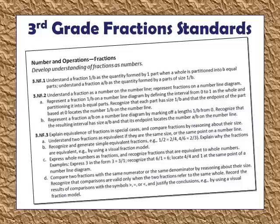NF2 relates to understanding fractions on a number line. NF3 focuses on comparing fractions and equivalent fractions. NF3 does not mean that we need to multiply the numerator and denominator by the same number; it means we are just building models and showing that any time two fractions are in the same place on a number line they have the same value, or any time two squares have the same amount shaded, they are equivalent.